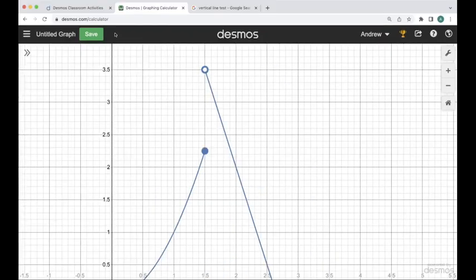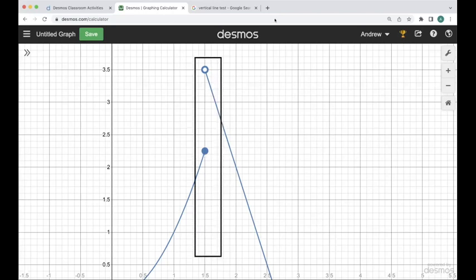So you'll look closely here and you'll notice that there's this open circle, closed circle thing. This graph has an open circle and a closed circle at x equals 1.5. Let's talk about why that is.